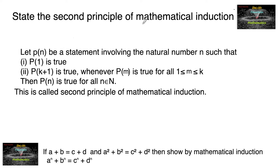State the second principle of mathematical induction. Let P be a statement involving the natural number n such that P(1) is true, and P(k+1) is true whenever P(m) is true for all 1 ≤ m ≤ k. Then P(n) is true for every natural number. This is called the second principle of mathematical induction.